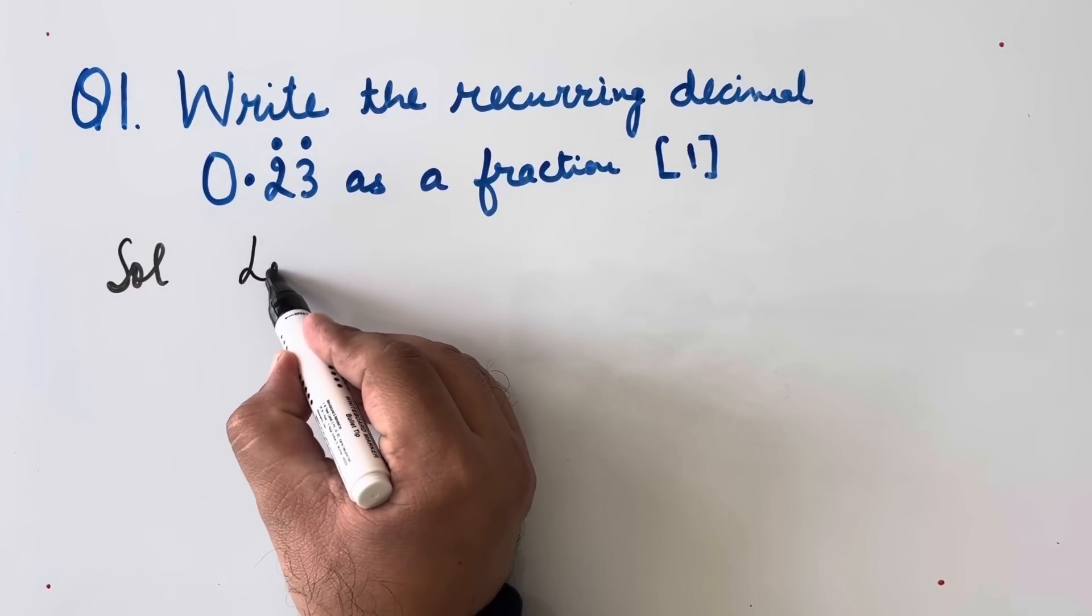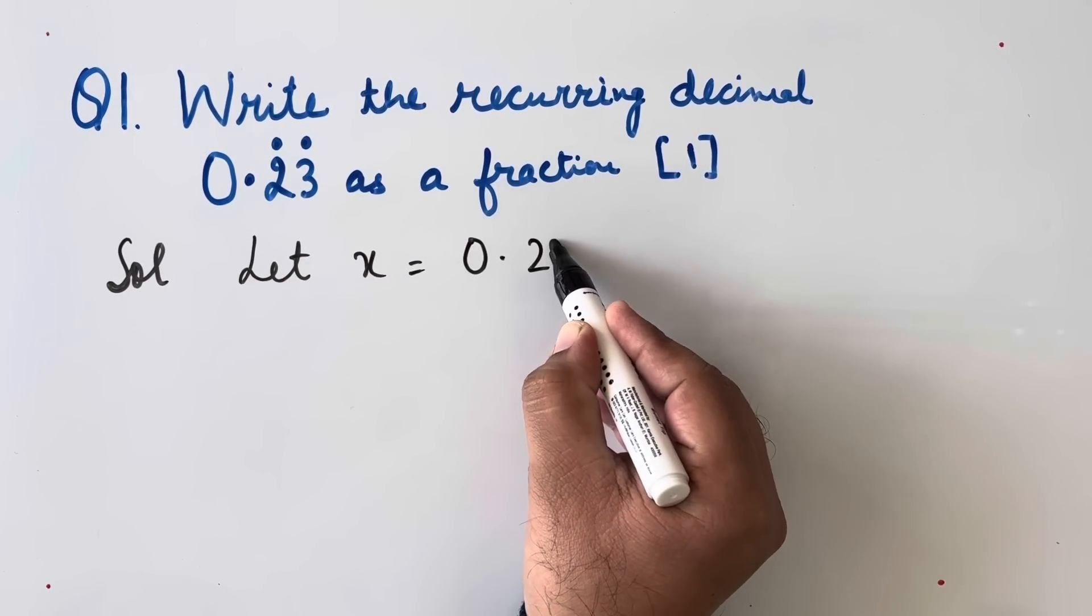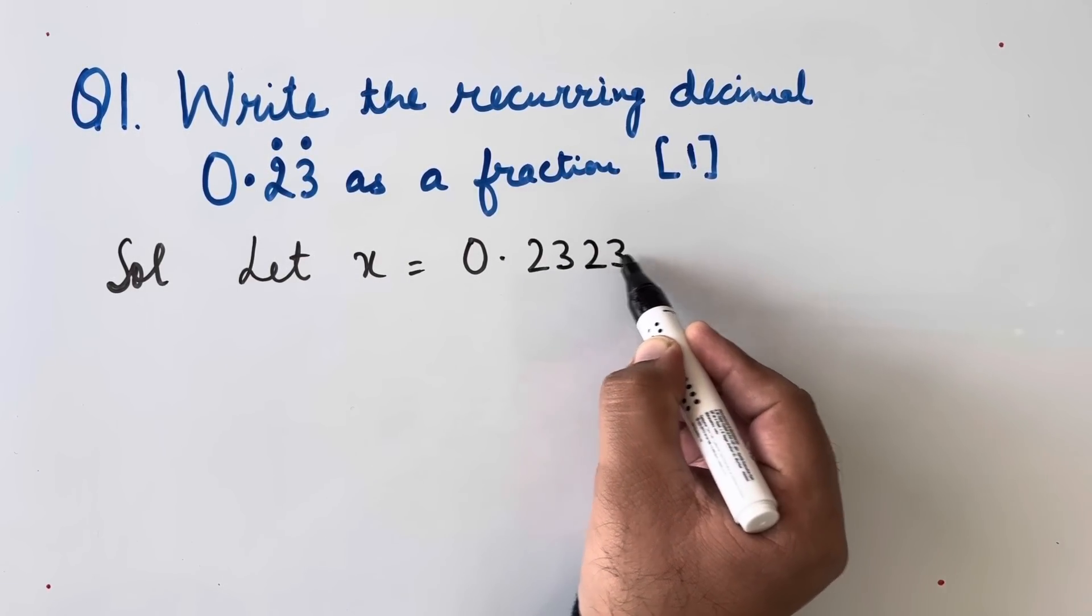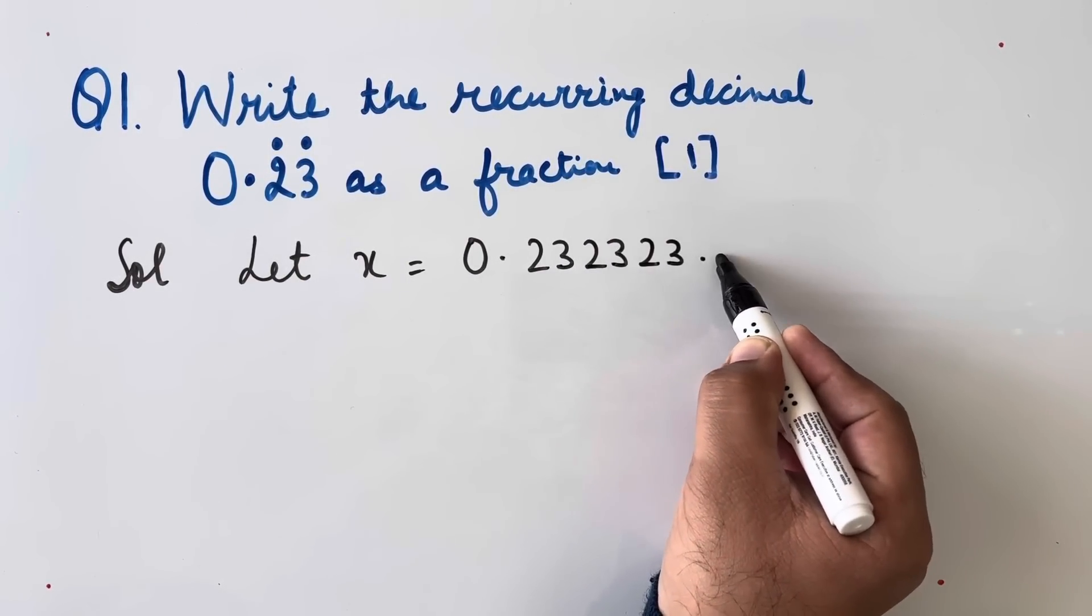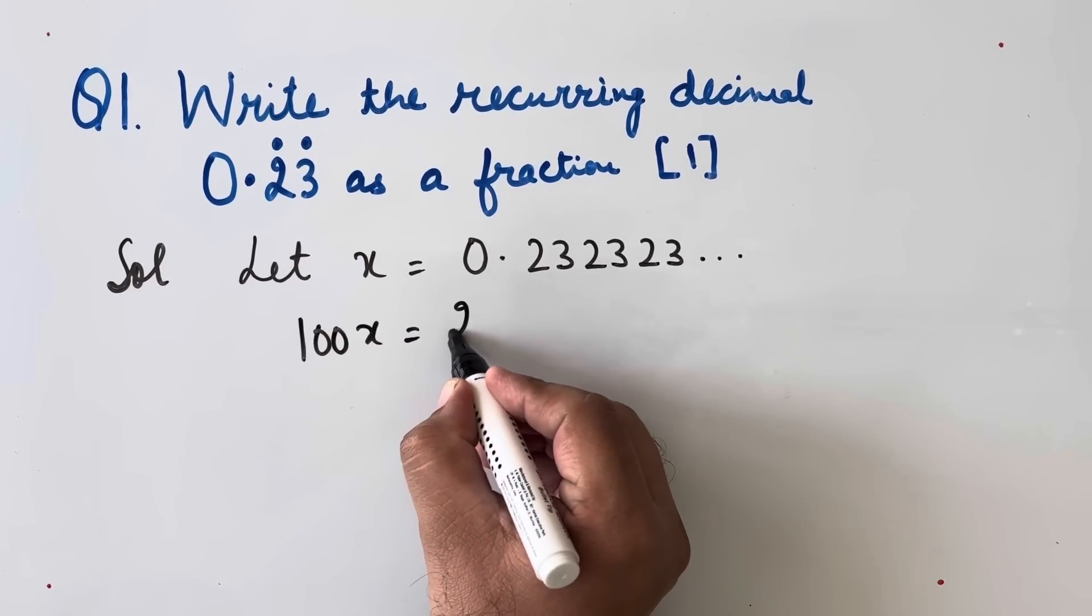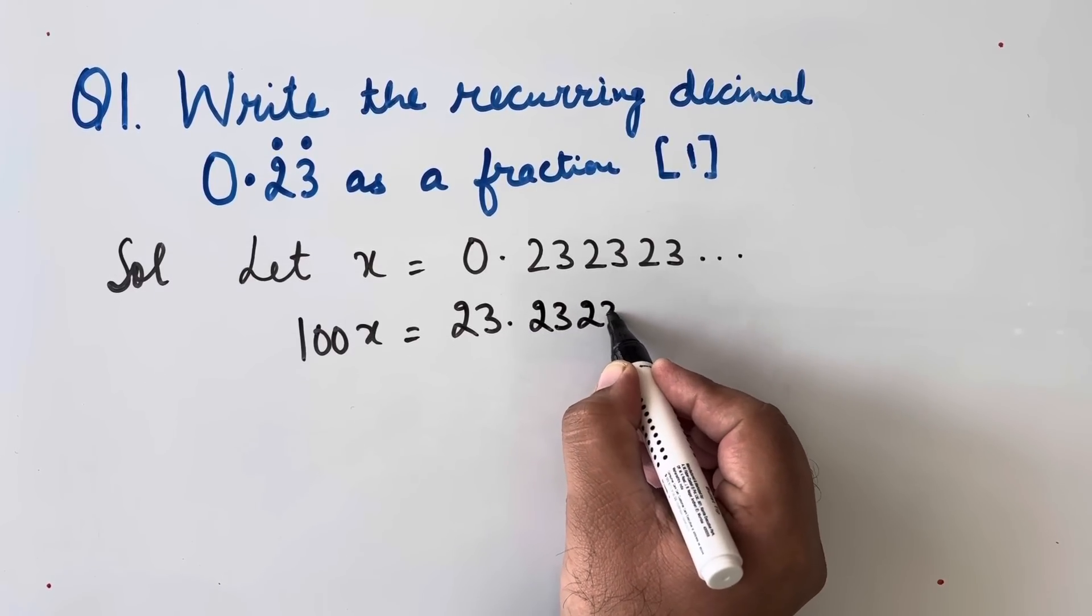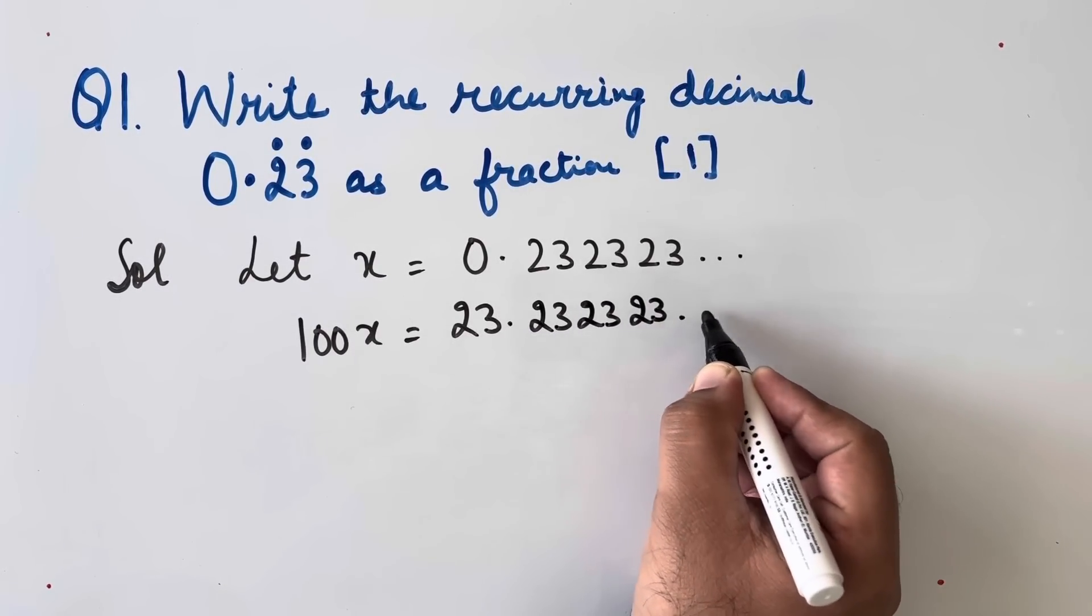So let us suppose x is equal to 0.232323 and so on. So 100x will be 23.232323 and so on.